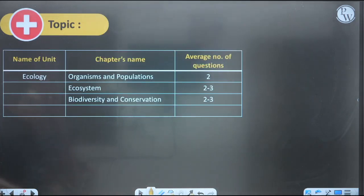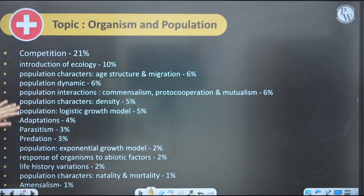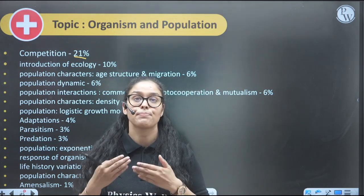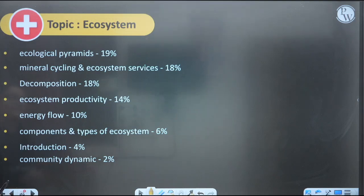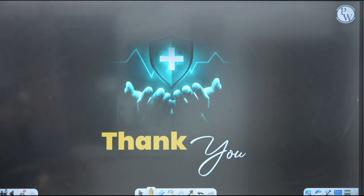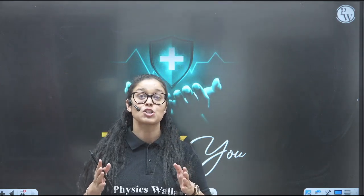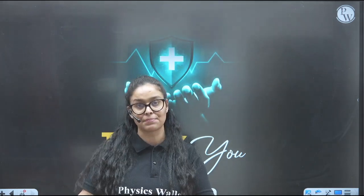Next is Ecology: Organism and Population — 2–3 questions; Ecosystem — 2–3 questions; Biodiversity — 2–3 questions. Competition carries 21% weightage within the Organism and Population chapter, with many questions from it in the past 7–8 years. Ecological pyramids are very important, as are mineral cycling and ecosystem services. The last chapter covers conservation — very important. Prioritize these high-weightage topics first, finish revising and practicing questions on them, and then move to lower-priority topics.